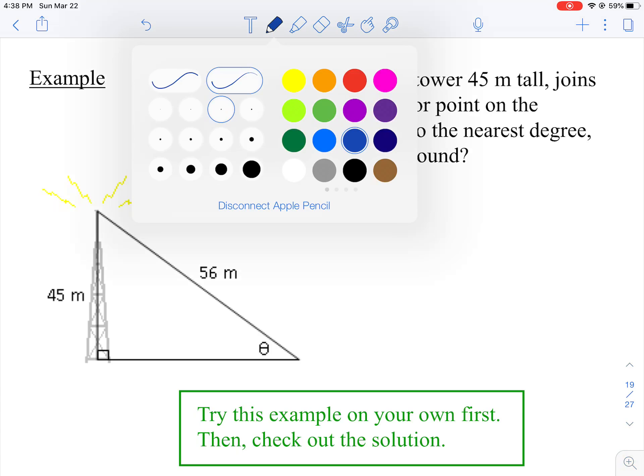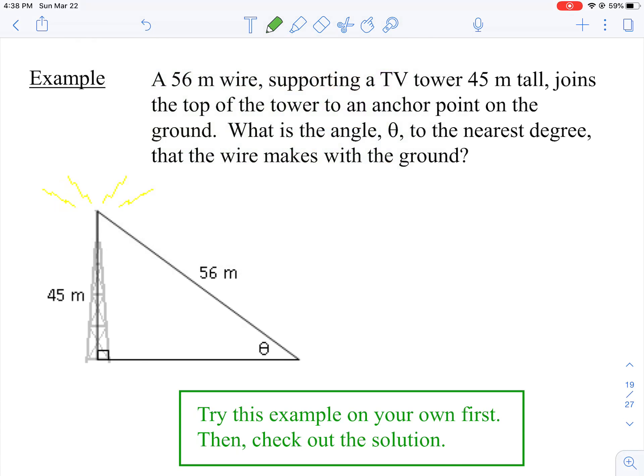So in this example, we have a 56 meter wire supporting a TV tower 45 meters tall. It joins the top of the tower to an anchor point on the ground. What is the angle theta to the nearest degree that the wire makes with the ground?